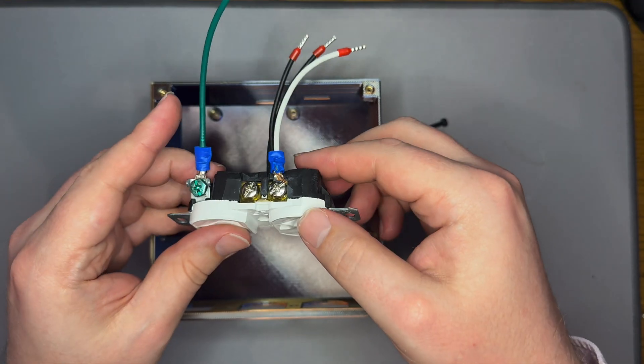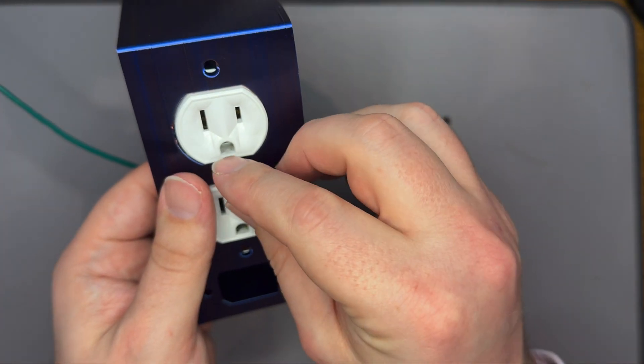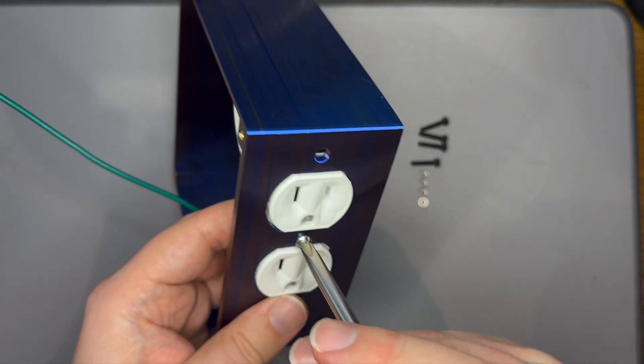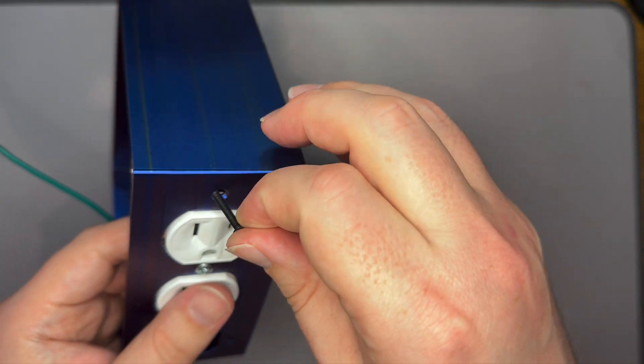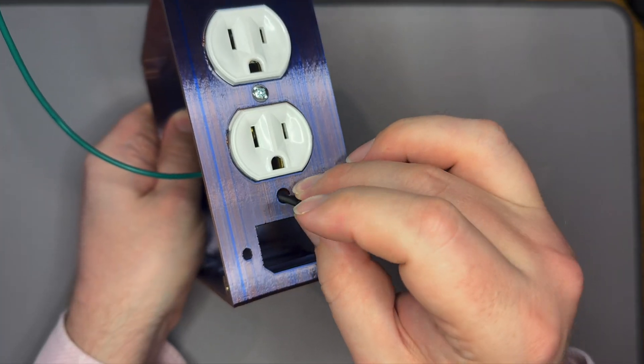The first thing I attach to the case is the US outlet. Insert the outlet through the front of the case and secure in the center with one of the two screws you removed from the outlet. Next, use two of the long M3 screws and two nuts to secure the top and bottom of the outlet.